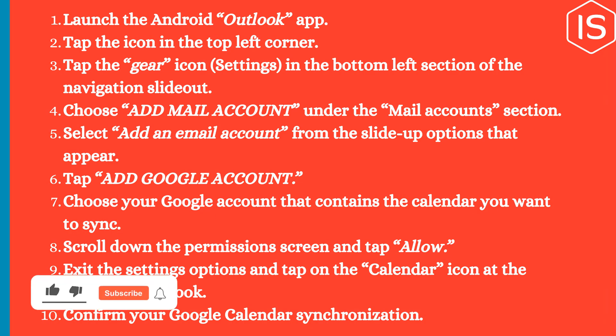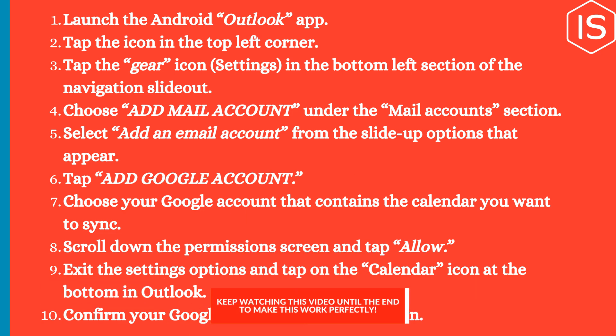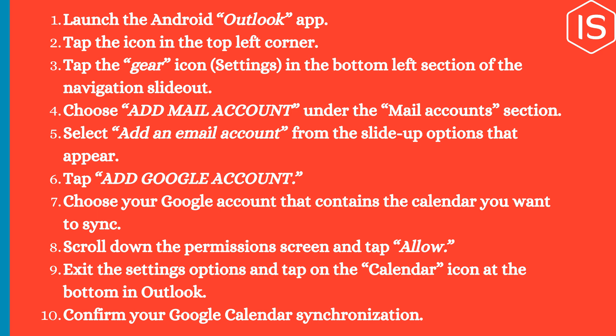Launch the Android Outlook app and tap the icon in the top left corner. Tap the gear icon for Settings in the bottom left section of the navigation slide-out. Choose 'Add Mail Account' under the mail accounts section, then select 'Add an email account' from the slide of options that appear.